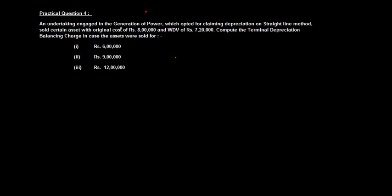An undertaking engaged in the generation of power which opted for claiming depreciation on straight-line method sold certain assets with original cost of rupees 8 lakh and written down value of rupees 7 lakh 20,000. Compute the terminal depreciation or balancing charge in case the assets were sold for 6 lakh, 9 lakh, or 12 lakh.